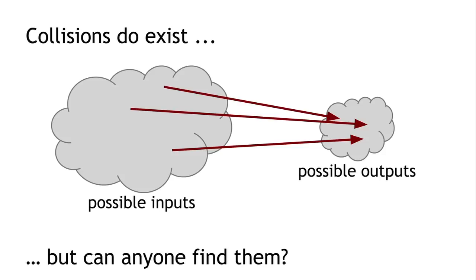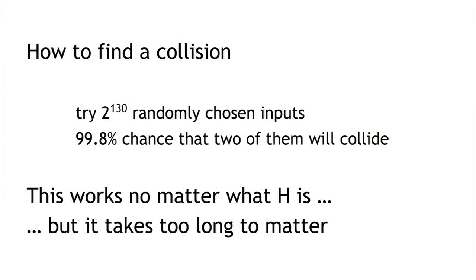There is a method guaranteed to find a collision: pick 2^130 randomly chosen inputs. There's a 99.8% chance that at least two of them will collide. But this method takes 2^130 steps — an astronomical number. If every computer ever made by humanity had been computing since the beginning of the universe, the odds that they would have found a collision is still infinitesimally small — way less than the odds that the Earth will be destroyed by a giant meteor in the next two seconds.